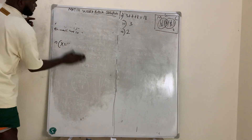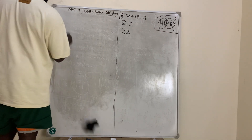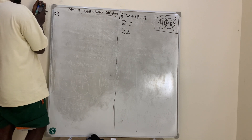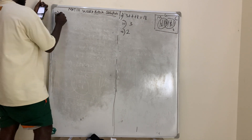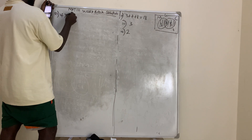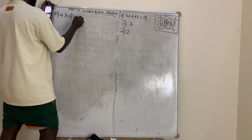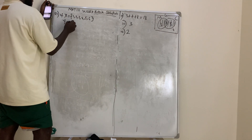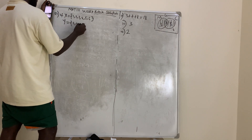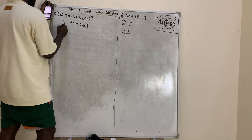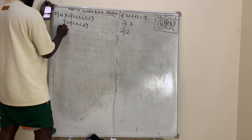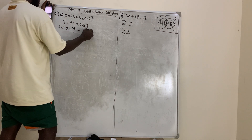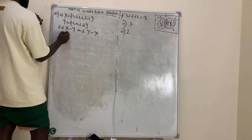Question number 39: If X is equal to the set {1, 2, 3, 4, 5, 6} and Y is equal to the set {2, 4, 6, 8}, find X minus Y and Y minus X.